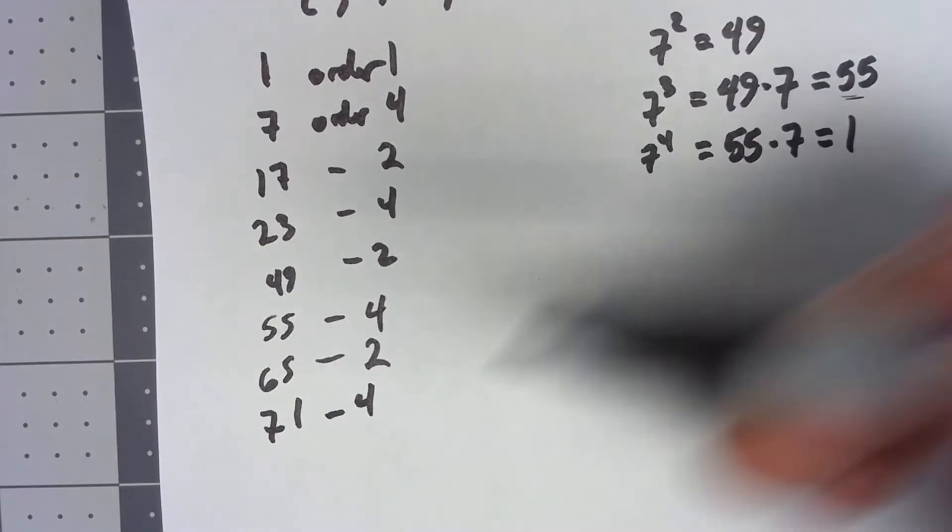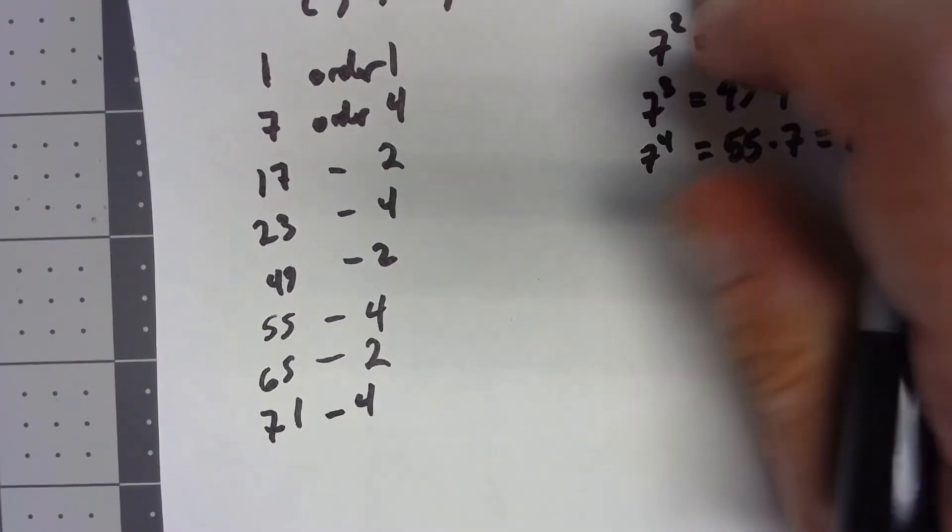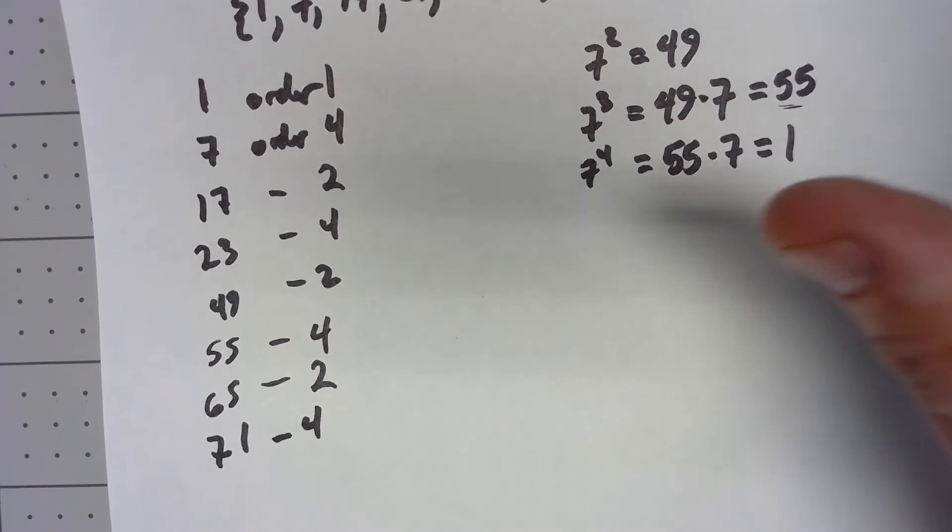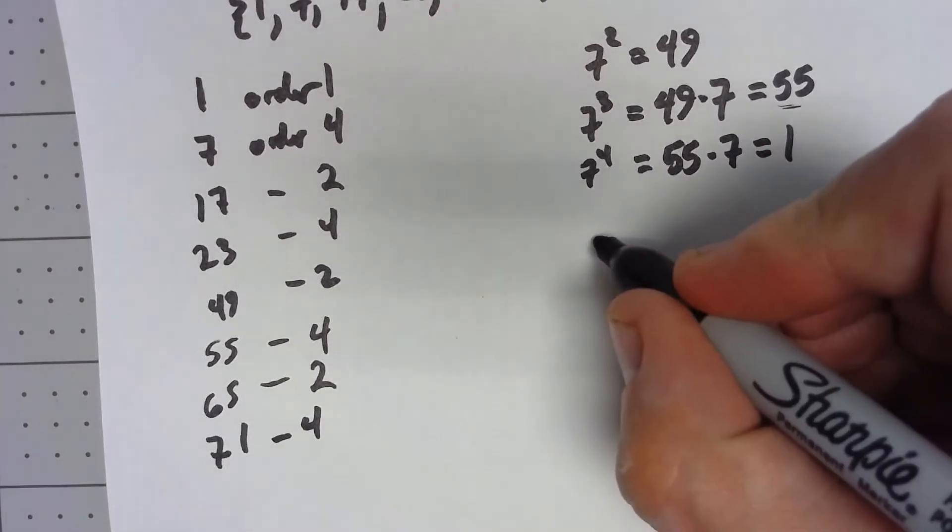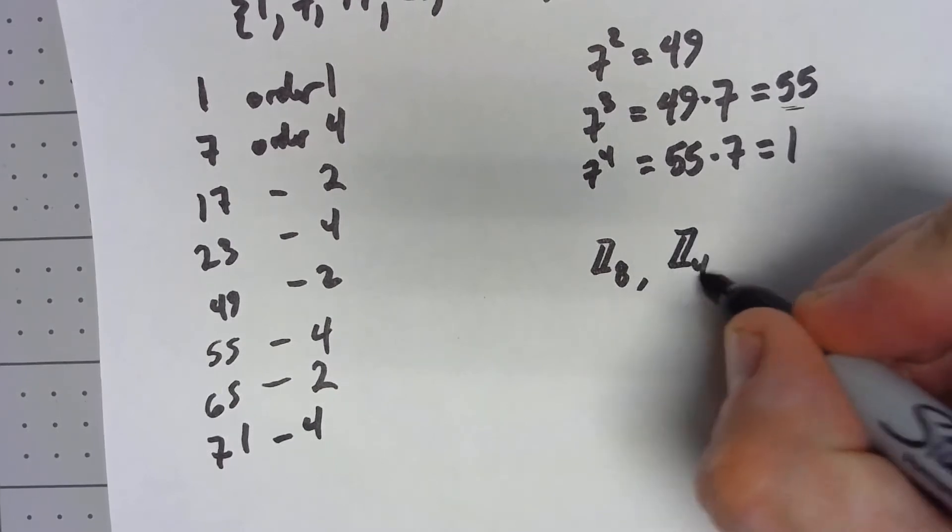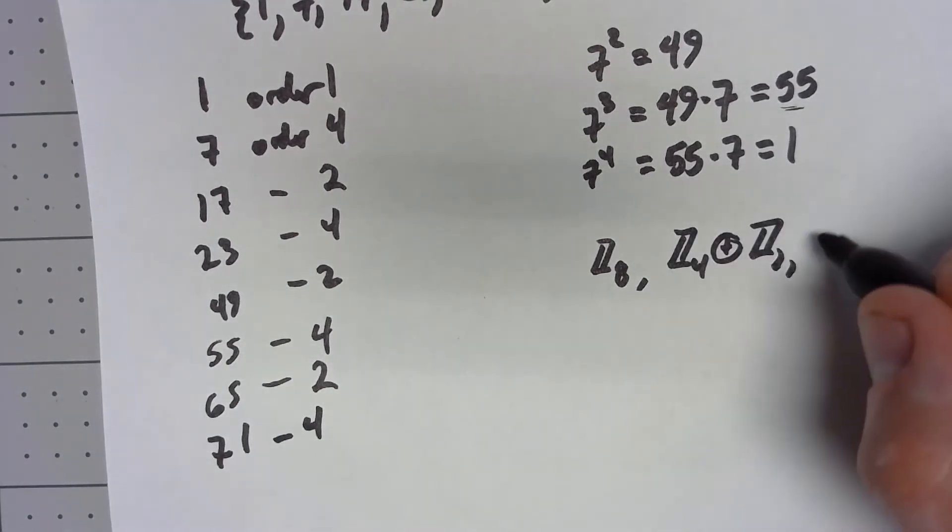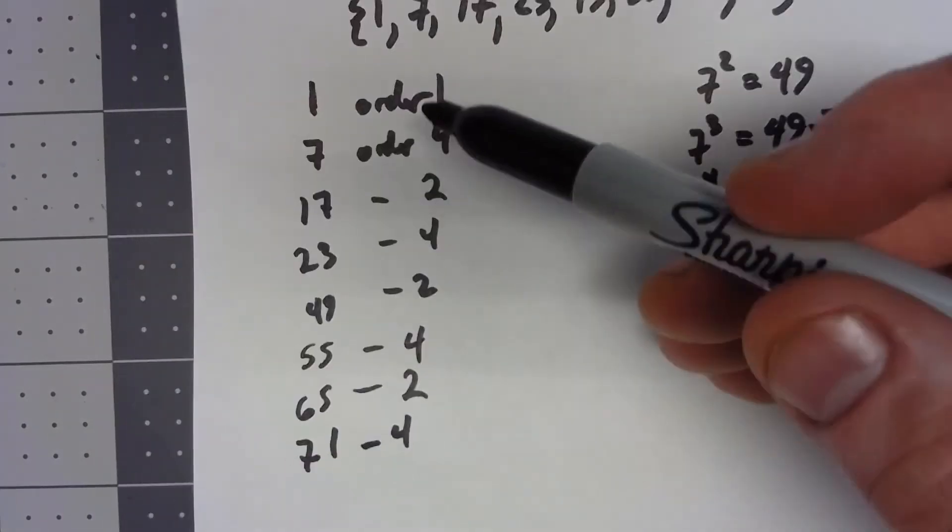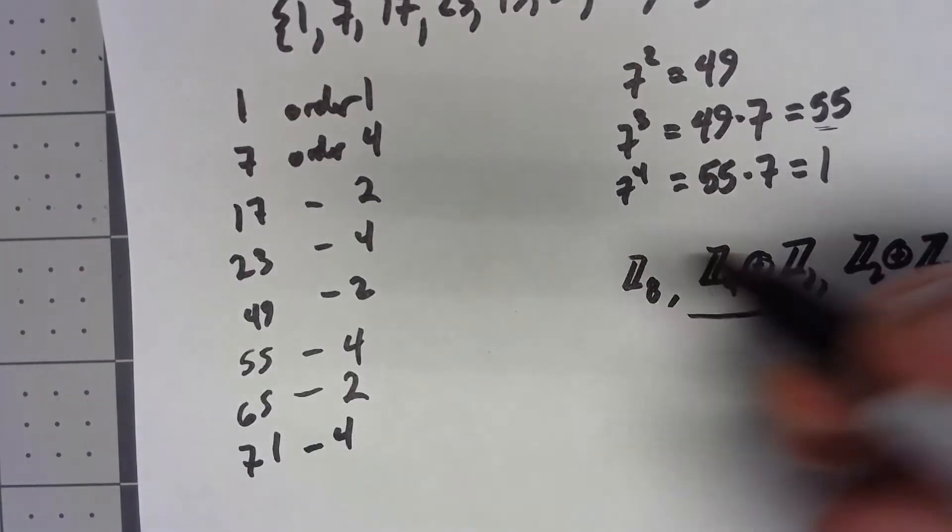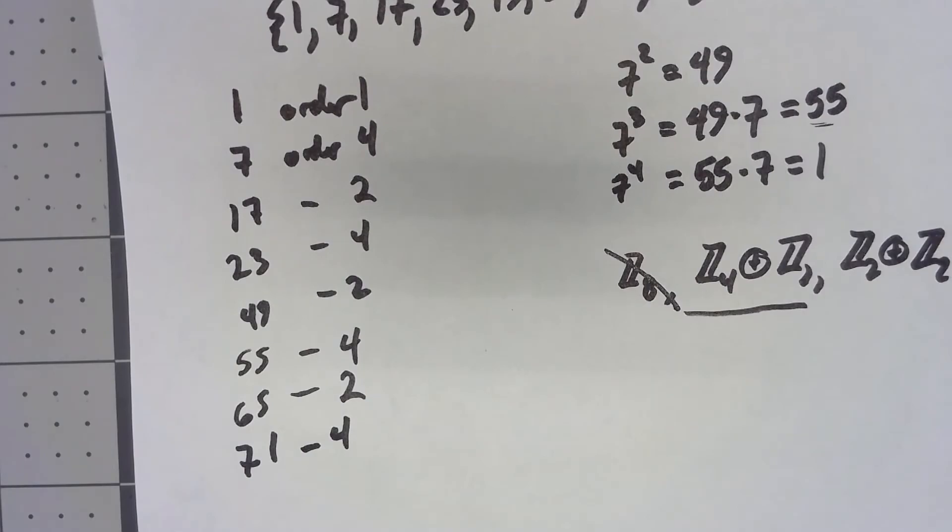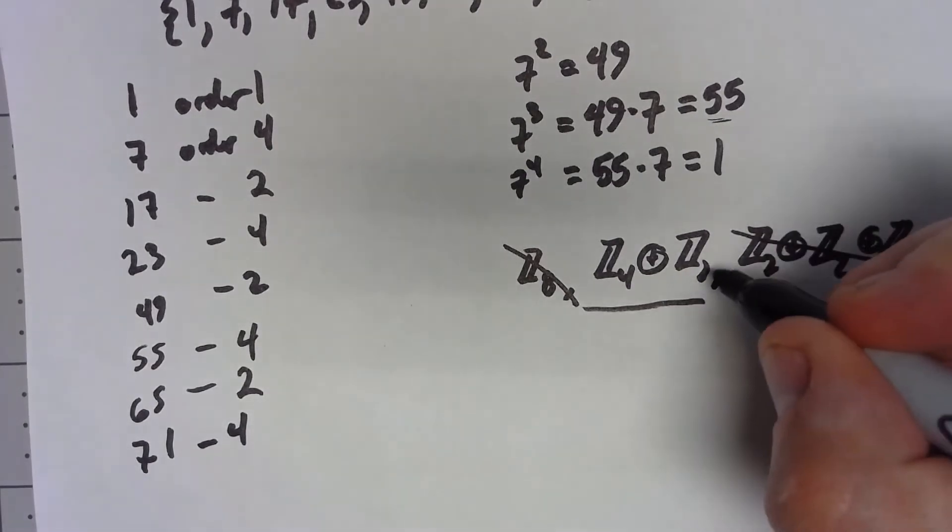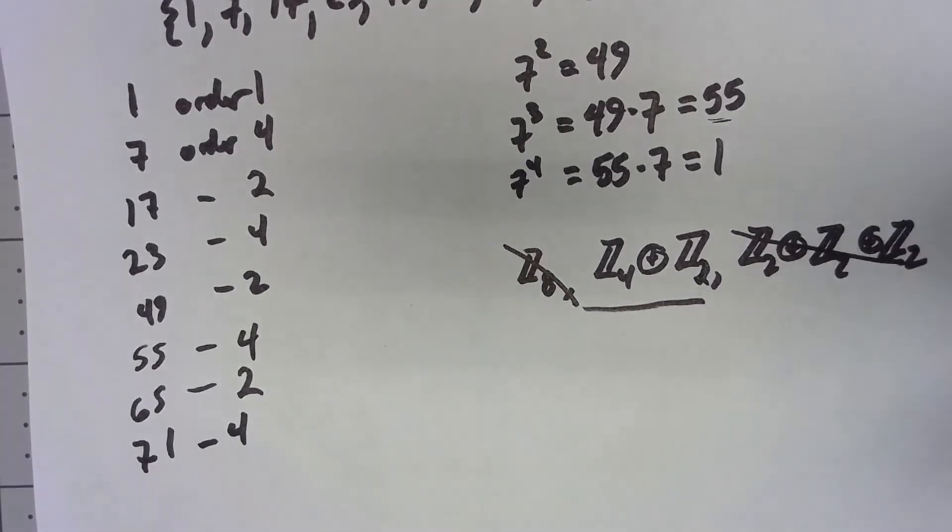Now honestly just looking at this I know what this group is isomorphic to because based on what we did before there's only three possibilities for what it's isomorphic to. It can be isomorphic to Z8, it could be isomorphic to Z4 direct Z2, and it can be isomorphic to Z2 direct Z2 direct Z2. But because of this list of orders I know it has to be Z4 direct Z2. There's no element of order 8 so it can't be Z8. It does have elements of order 4 whereas everything in Z2 direct Z2 direct Z2 is order 2.